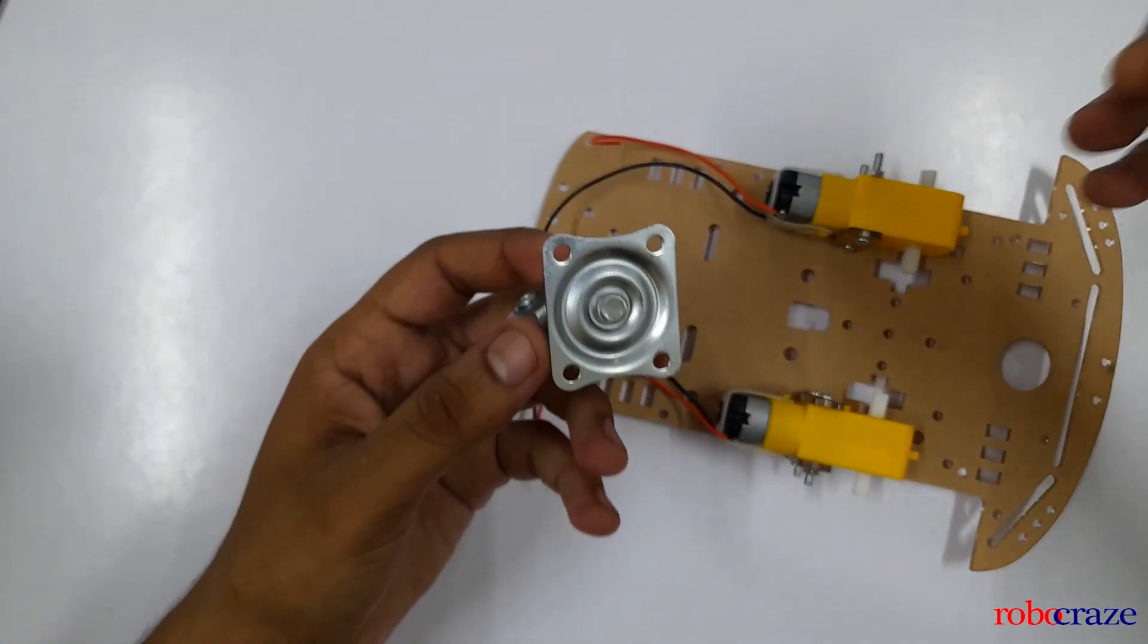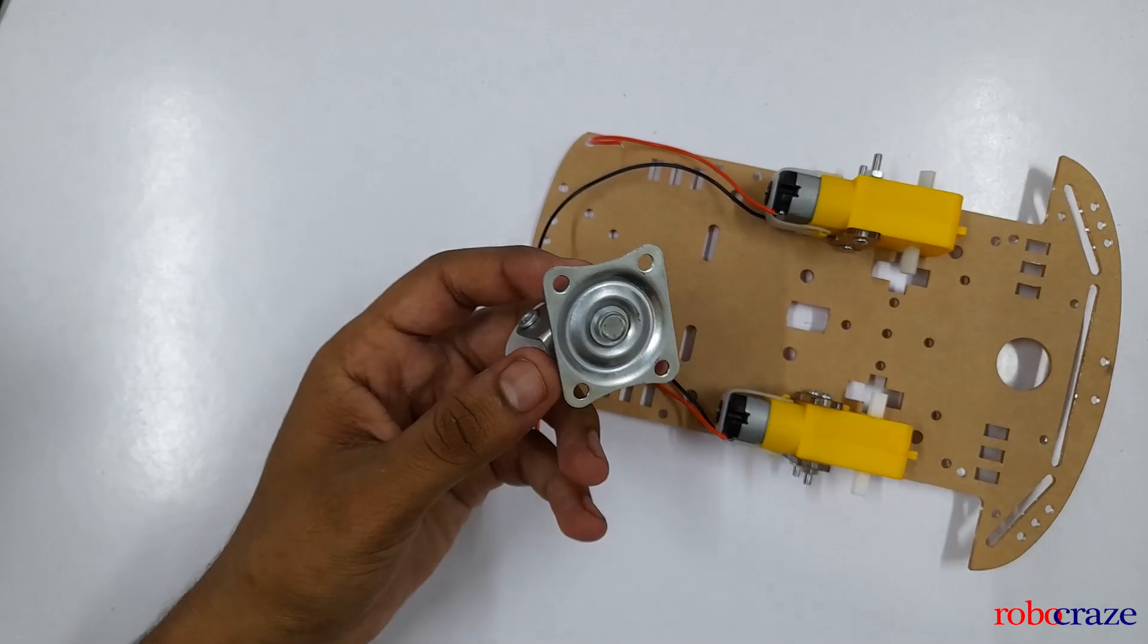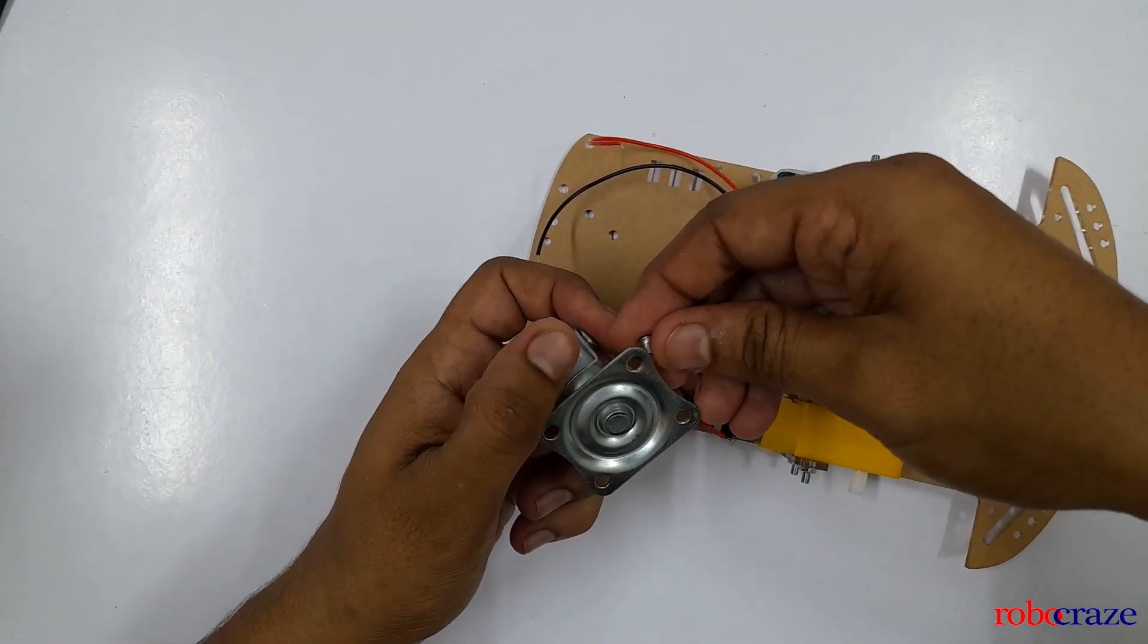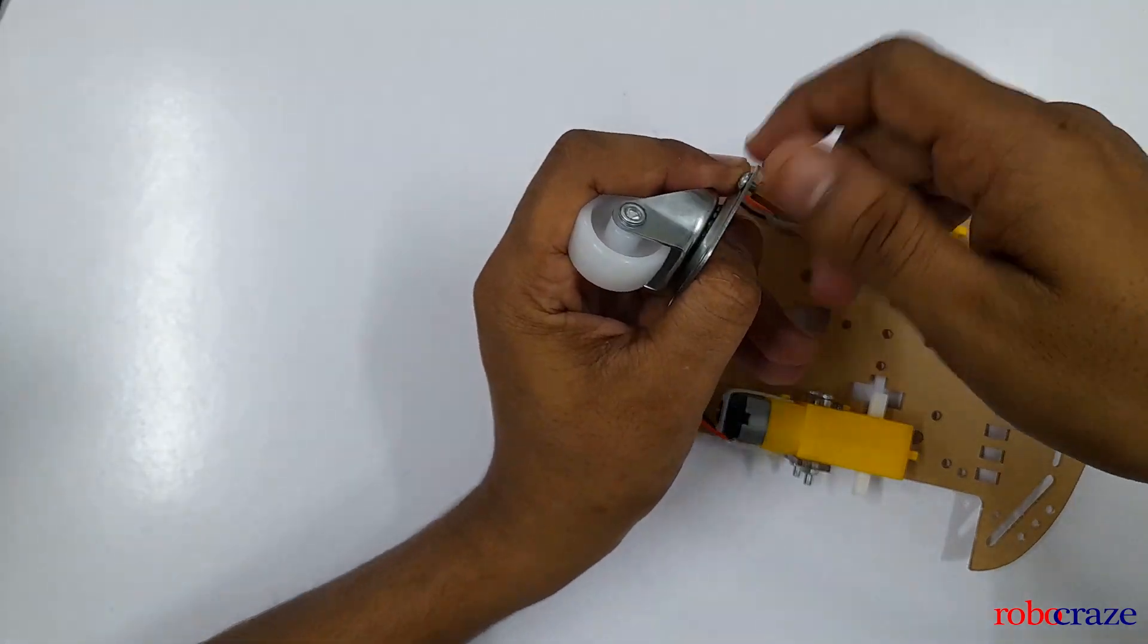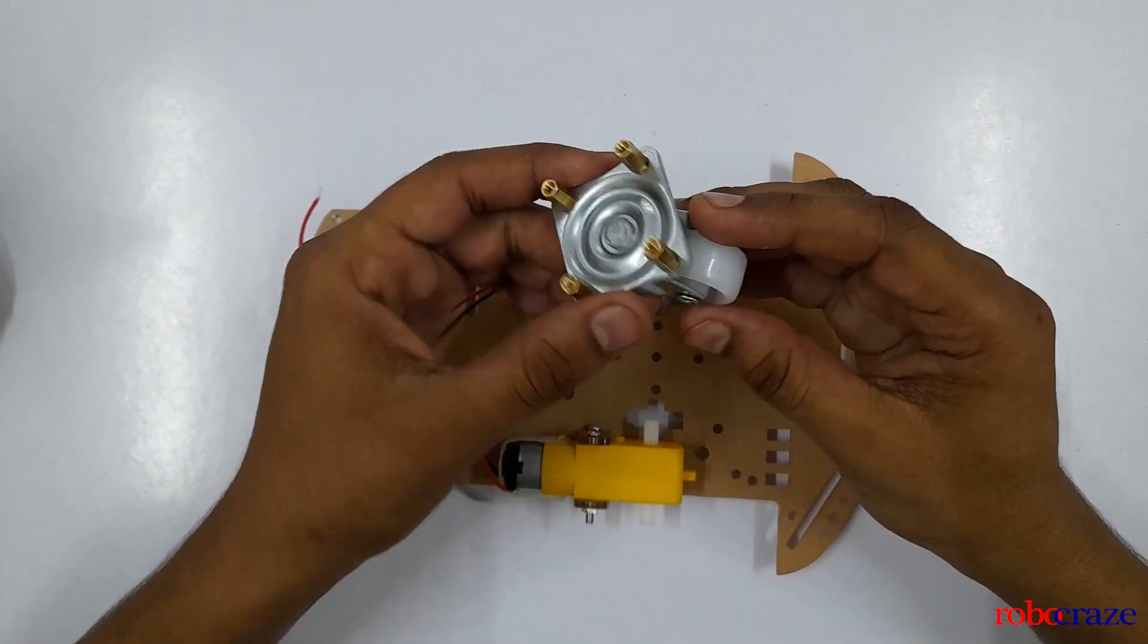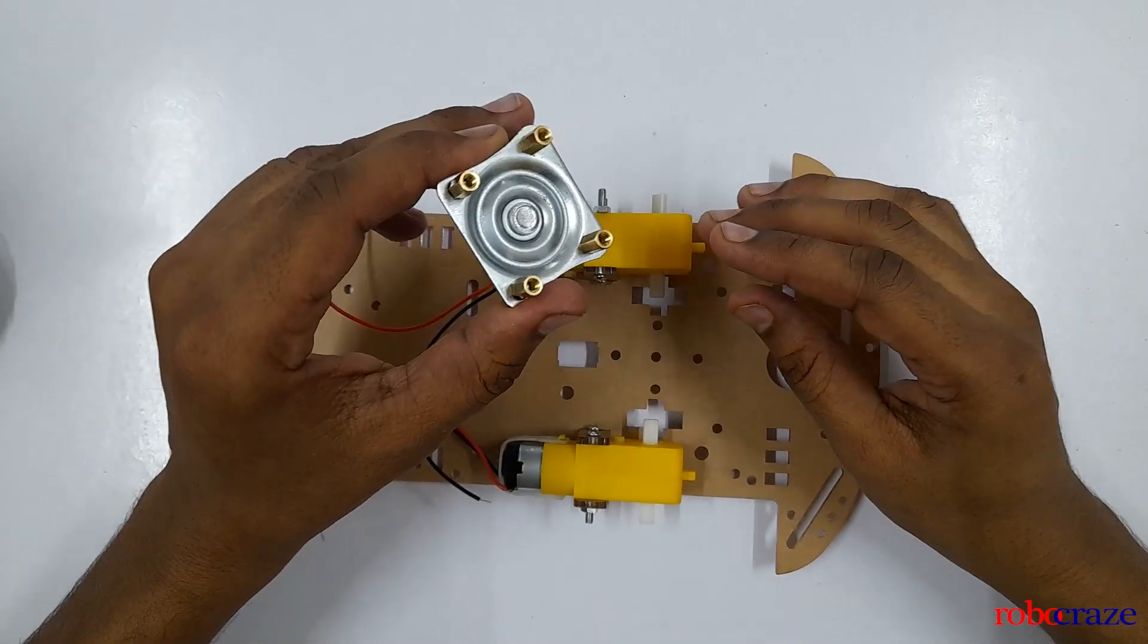After mounting the motors, mount your universal wheel. For mounting universal wheel you will need to use spacers. First put the screw and the spacer to tighten it up. This is how it will look after you mount all the four spacers.